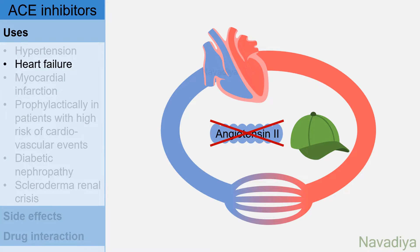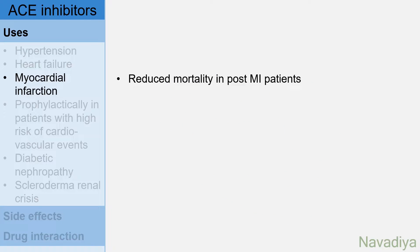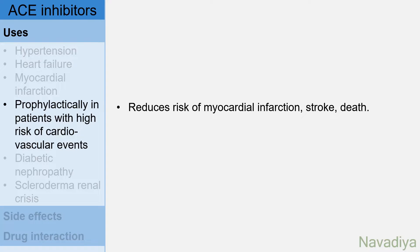Next use is in heart failure. Reduced blood pressure by ACE inhibitors reduces afterload on the heart, and reduced venous return reduces preload. This makes it easy for a failing heart to pump blood. Next, myocardial infarction: ACE inhibitors reduce mortality when used in post-MI patients. They are also useful prophylactically in patients with high risk of cardiovascular events, where they are found to reduce risk of myocardial infarction, stroke and death.